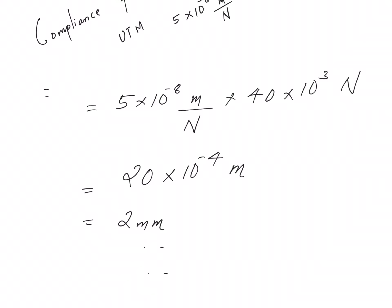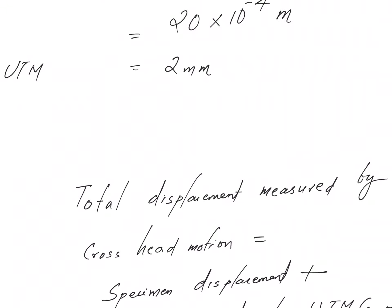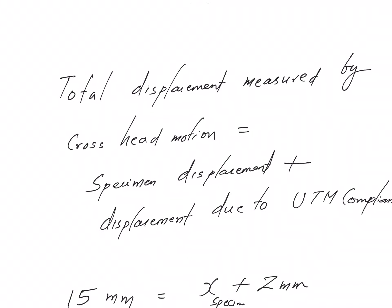So this is the amount of deformation that will happen within the UTM. It's not in the specimen, it's in the UTM. So you should not be using this to compute the strain in the specimen. Make sense? That's the catch of this problem. Everything else is far more simple.